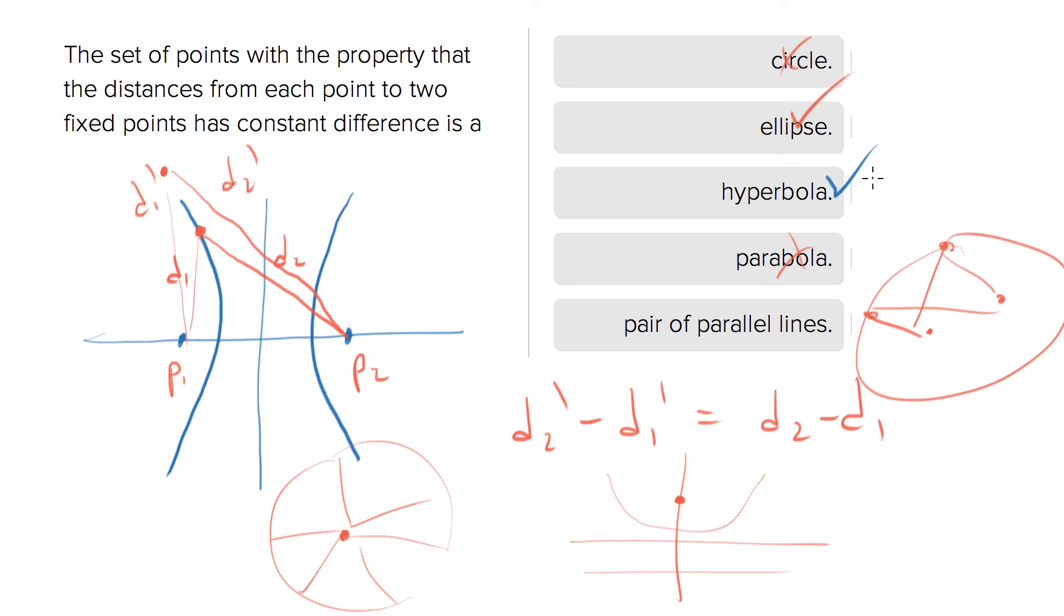And a pair of parallel lines is just the set of points where the shortest distance from one set to the other set is always constant.